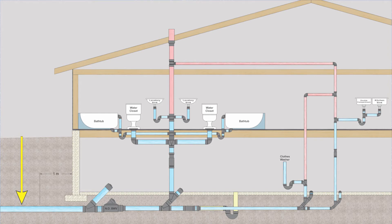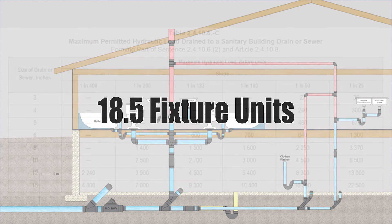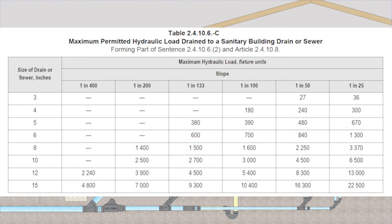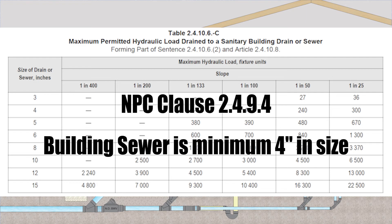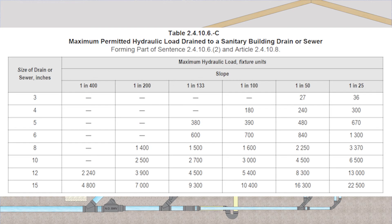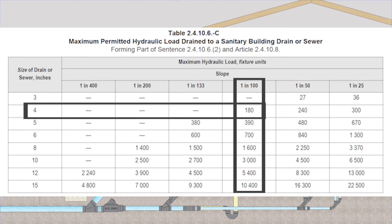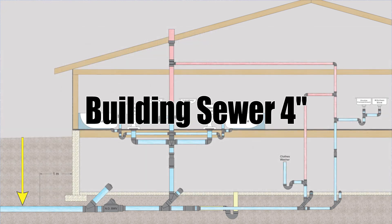Now we size the building sewer. The building sewer will have the exact same amount of fixture units as the building drain — 18.5 fixture units — because it's just one pipe flowing into the next. We also use table 24106C to size the building sewer. Before we get into that table, we need to reference code clause 2494, which tells me the minimum size of building sewer downstream of the main cleanout must be four inches. So four inch is our starting point. I'll grade this building sewer at 1 in 100 — at that slope, table 24106C shows I can handle 180 fixture units on four inch. That's enough for many commercial buildings, so the building sewer for our example will be four inches. A four inch building sewer is very common in the field — it would take quite a huge building to need something bigger.